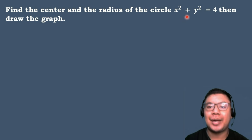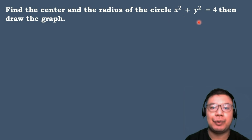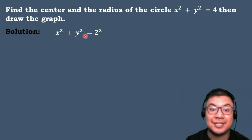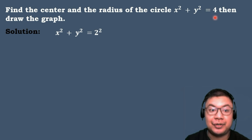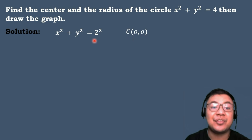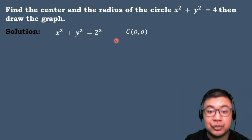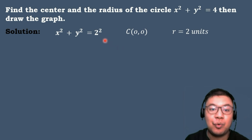Our first example: find the center and the radius of the circle x² + y² = 4, then sketch the graph. The first step is to convert the equation in center-radius form. So x² + y² = 4 becomes x² + y² = 2², since 4 is a perfect square. Since the values of h and k are equal to 0, the center is at the origin with coordinates (0, 0), and the radius is equal to 2 units.